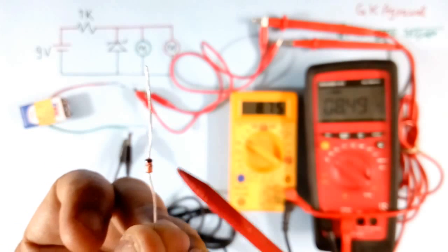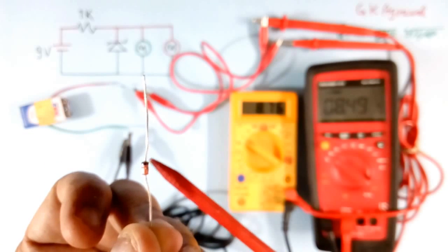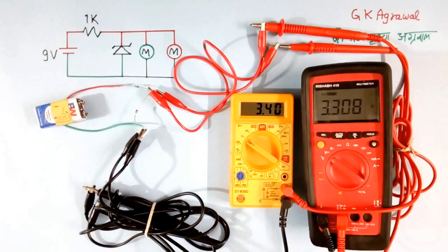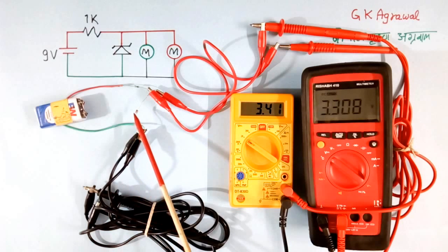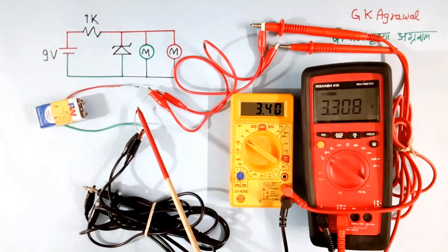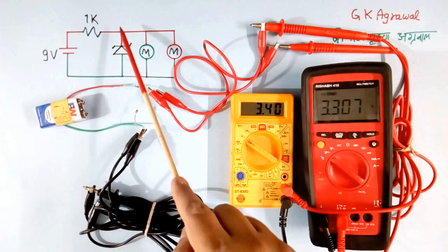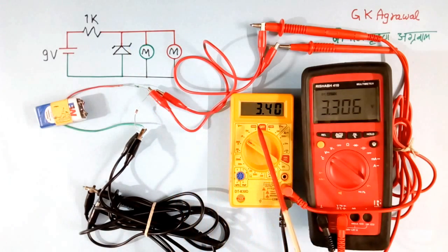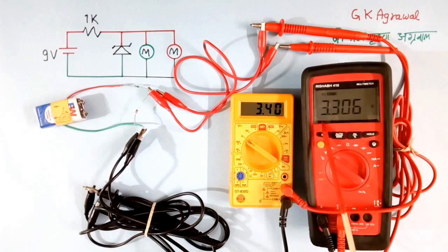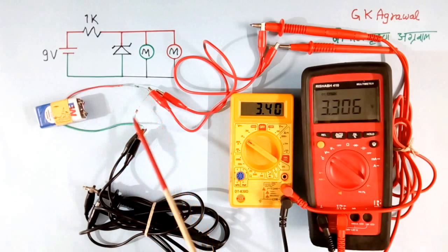This is a Zener diode. You are seeing a black color ring here. This terminal is the cathode. I will connect it here. See, I have connected the Zener diode. This ring terminal, black color spot, I have connected here at the top. Now both multimeters are reading the voltage of the Zener diode.